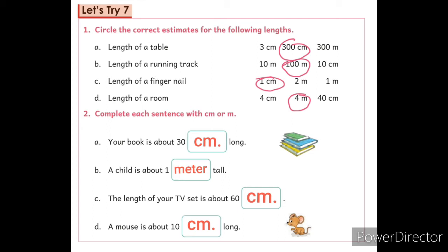Question number 2: Complete each sentence with cm or m. Question number 2, part A: Your book is about 30 dash long. Aapki book ki lambai kitni hogi? So, the right answer is cm.